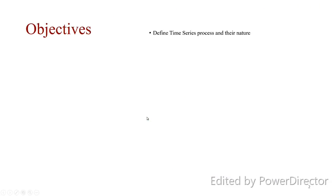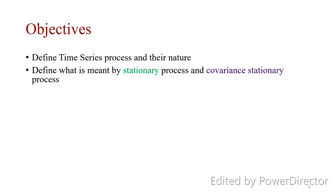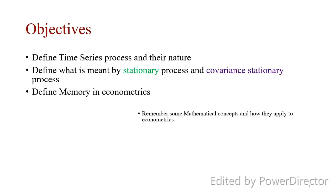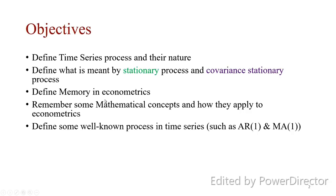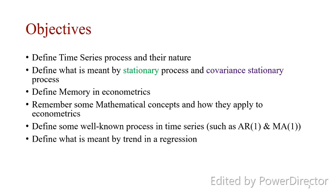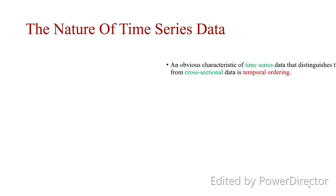We are also going to be talking about what is meant by stationary process and covariance stationary process. We will define memory in econometrics, remember some mathematical concepts and how they apply in econometrics, and define well-known processes in time series such as the autoregressive of order one and the moving average of order one. We'll define what is meant by trend and regression model, and most importantly, what we mean by random walk and forecasting.